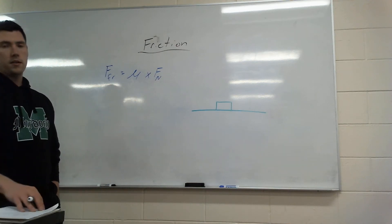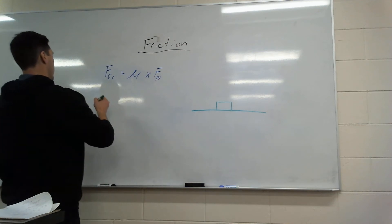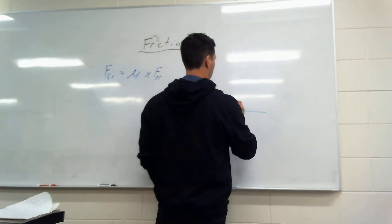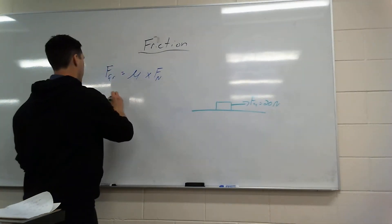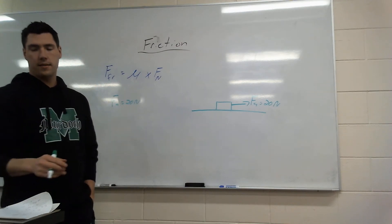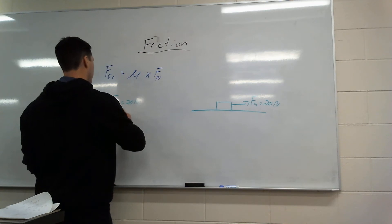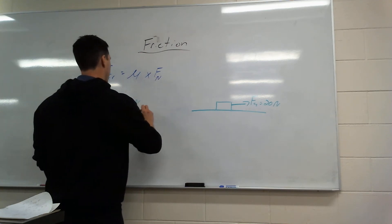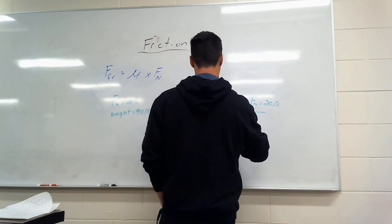So question one. In this question it says that we have a force applied of 20 newtons. So someone is pulling with a force applied of 20 newtons. Then it says there's a weight of 90 newtons. So we have a weight of 90 newtons.